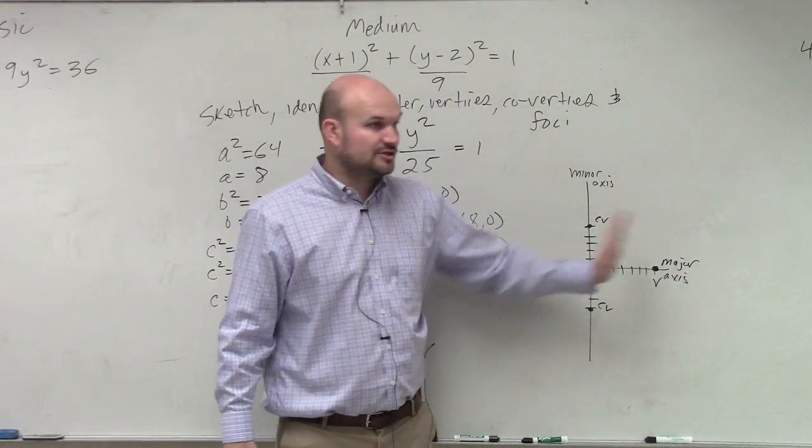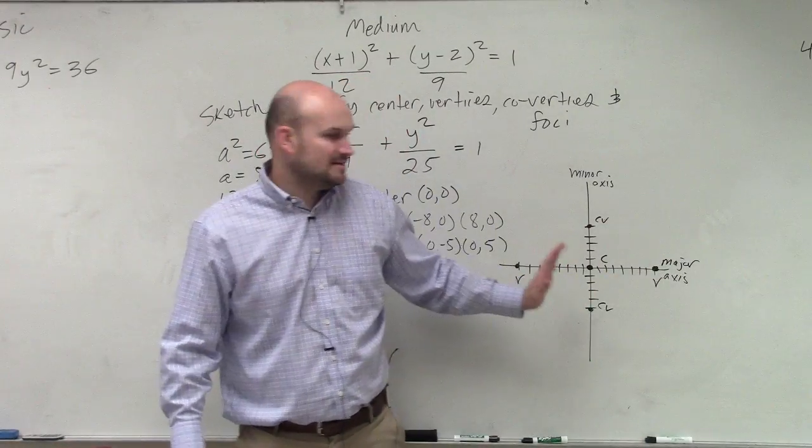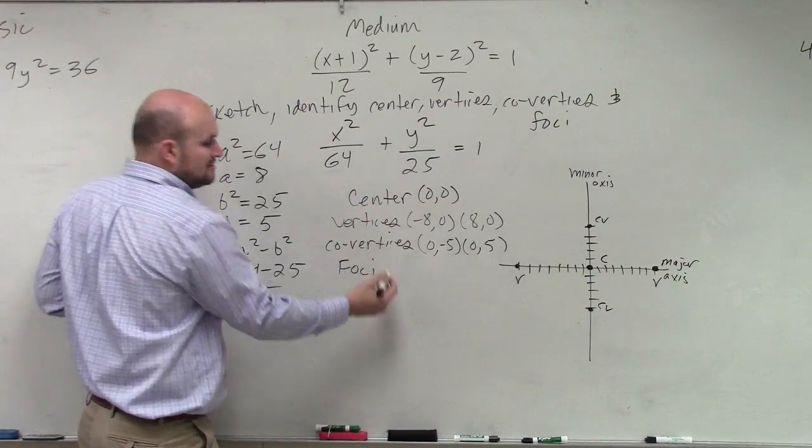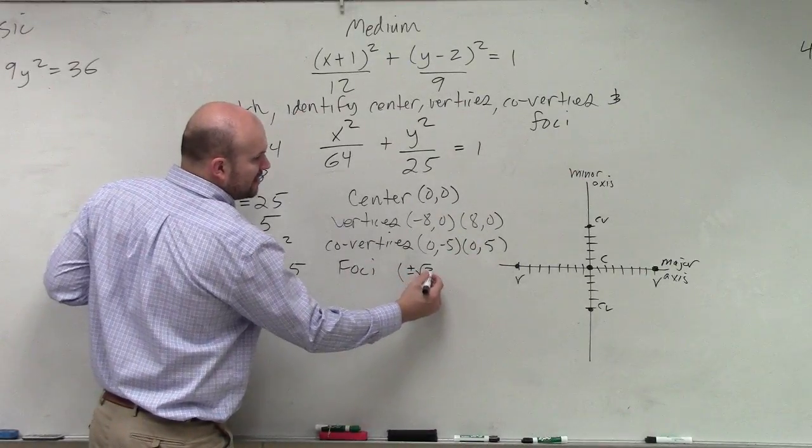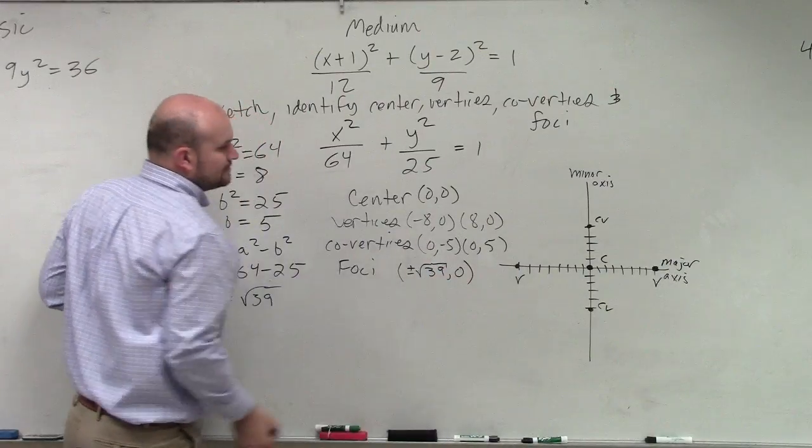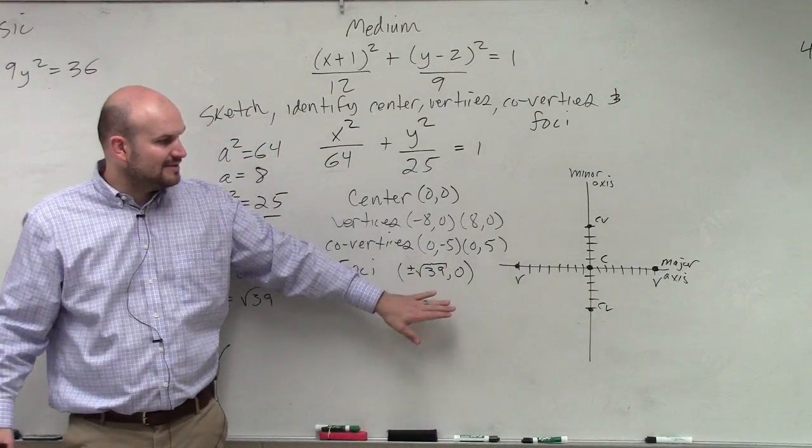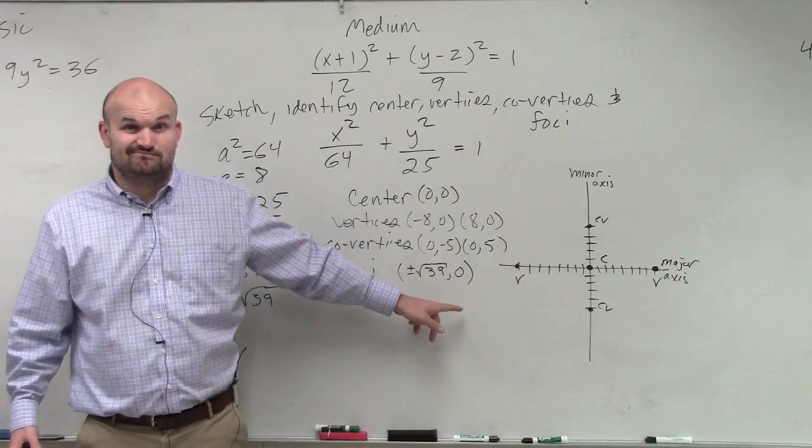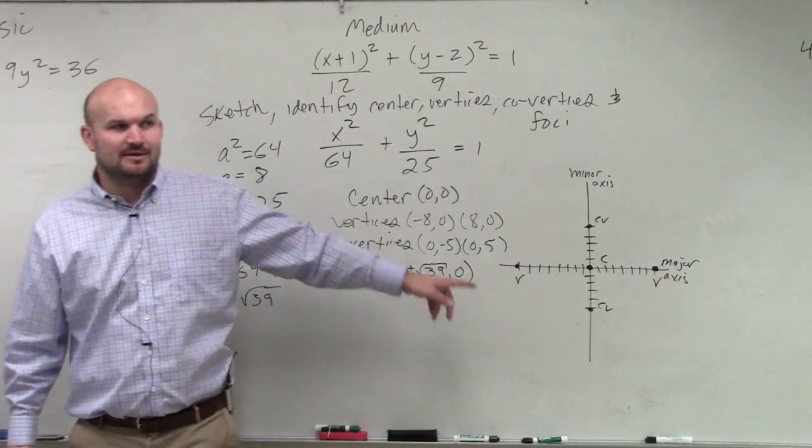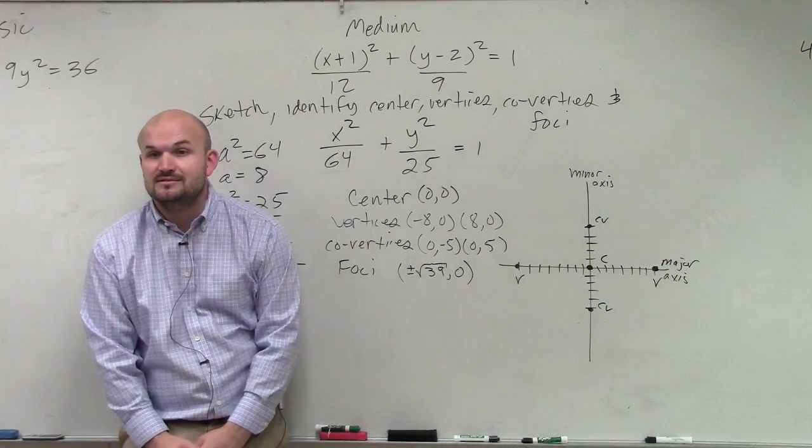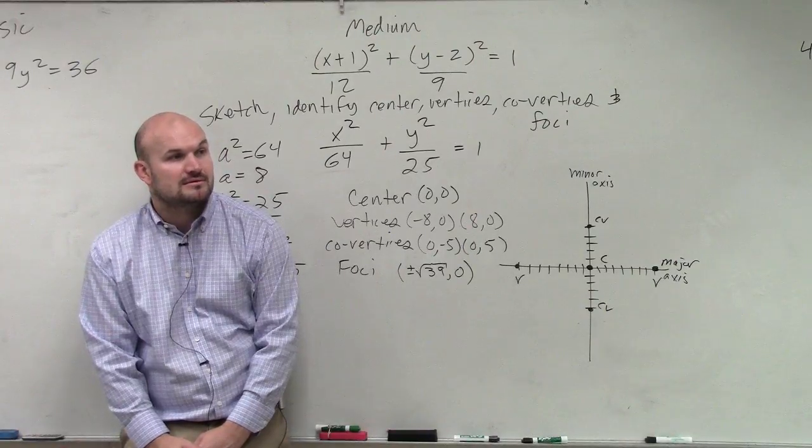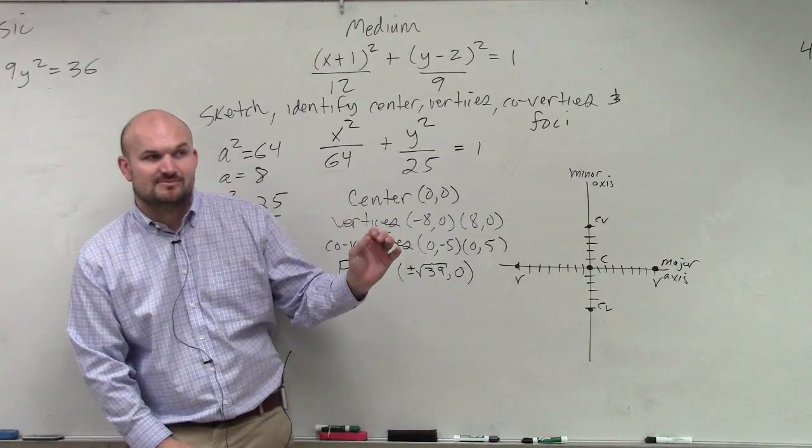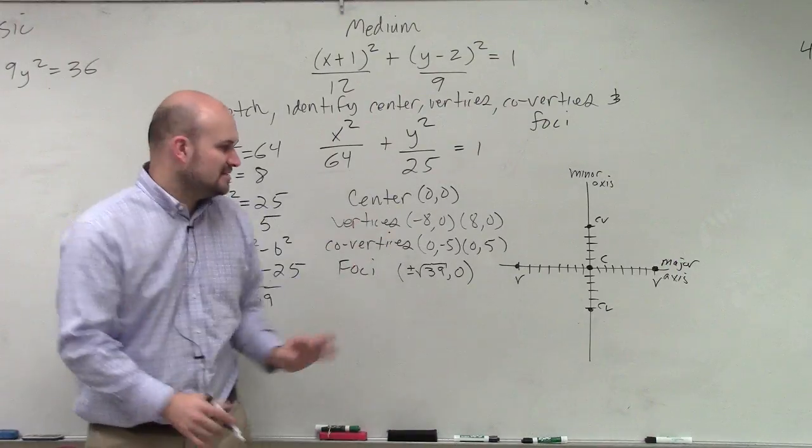Foci are on the major axis, right? So therefore, in this example, they're going left or right. So all I need to do for my foci, if they're going left or right, that means I'm changing the x-coordinate, right? Not the y-coordinate. So technically, my foci are just plus or minus the square root of 39 comma 0. You could write them separately if you wanted to. Now, what if I did ask you to graph this? Would you guys know where to graph the square root of 39? Without a calculator? Maybe. Let's think about stuff we know. The square root of 36 is 6, the square root of 49 is 7. The square root of 39 is between 36 and 49, right? So would it make sense then, the square root of 39 is between 6 and 7? Yes. So just estimate. It doesn't need to be perfect.